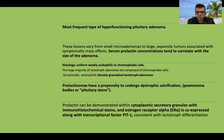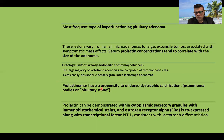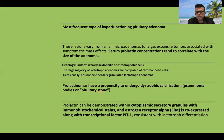The majority of prolactinomas are composed of chromophobic cells, and occasionally they are composed of predominantly eosinophilic, densely granulated cells. Prolactinomas can also have dystrophic calcification — many undergo secondary calcification changes, including laminated ring-shaped calcified deposits known as psammoma bodies.